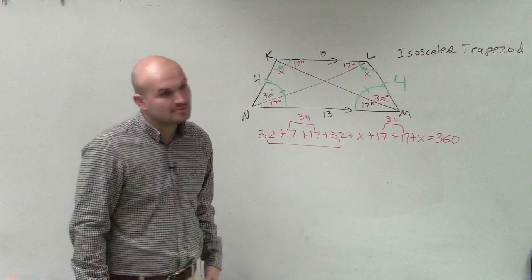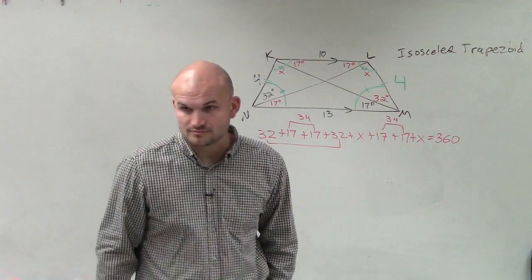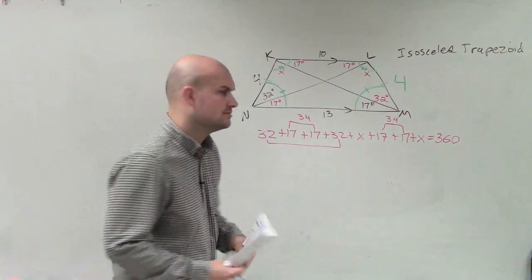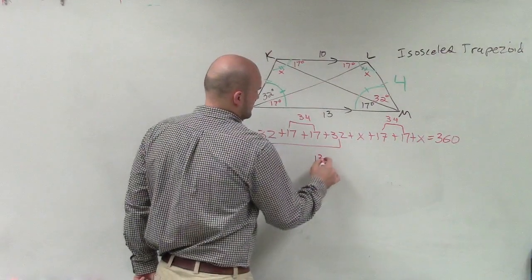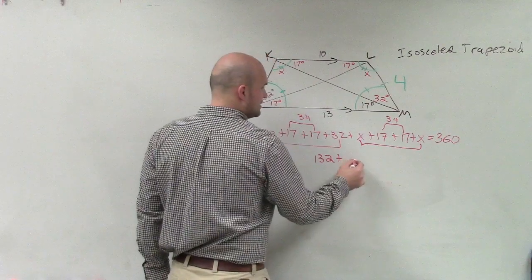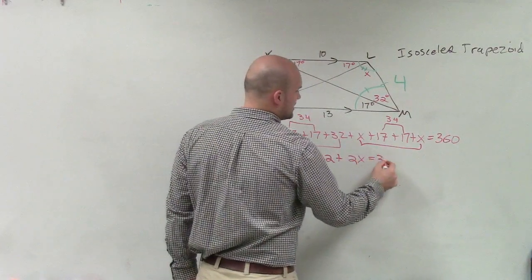And that's going to be 64. So therefore, I have 68 plus 64, which would be 132, plus x and x, which is 2x, equals 360.